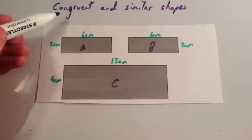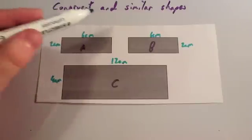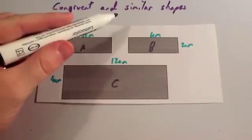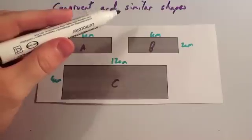So to summarise: congruent means two shapes are the same shape and size. Similar means one is an enlargement or a reduction of the other one.